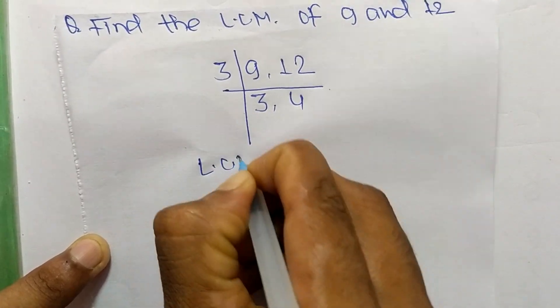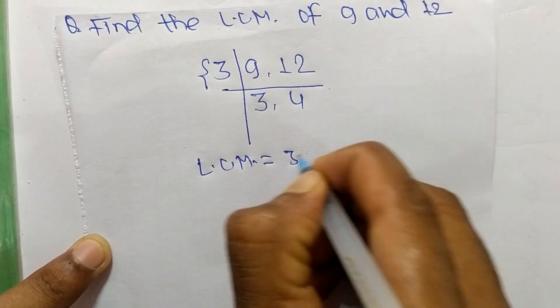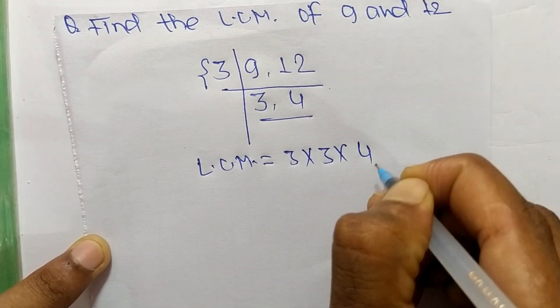So now the LCM equals 3 from this part, and from this part it's 3 and 4.